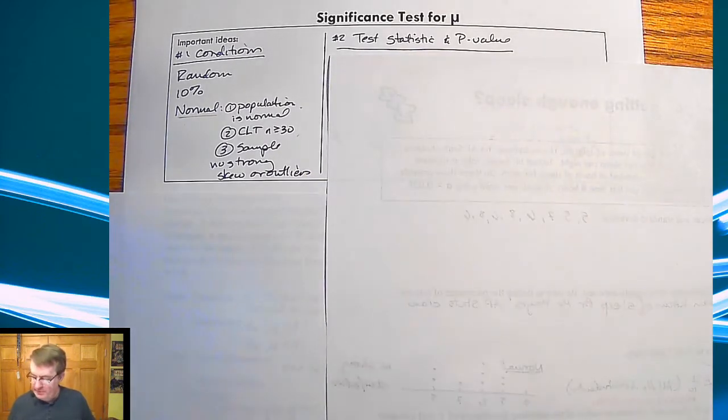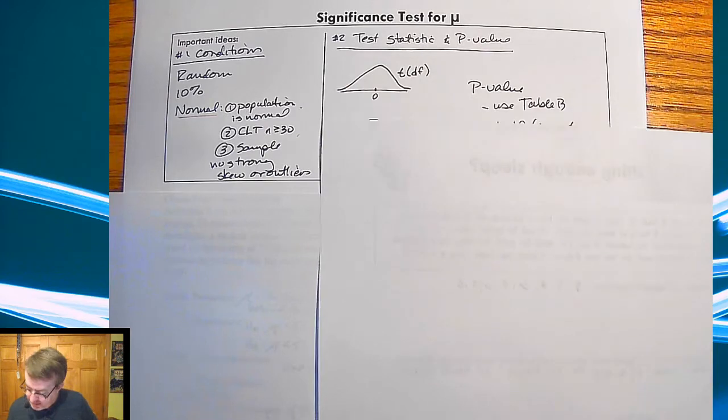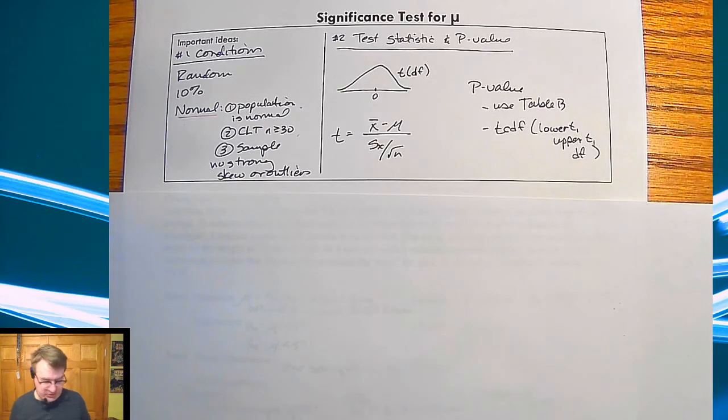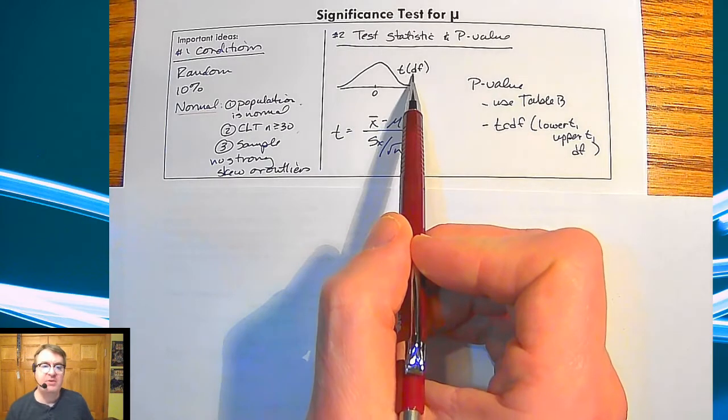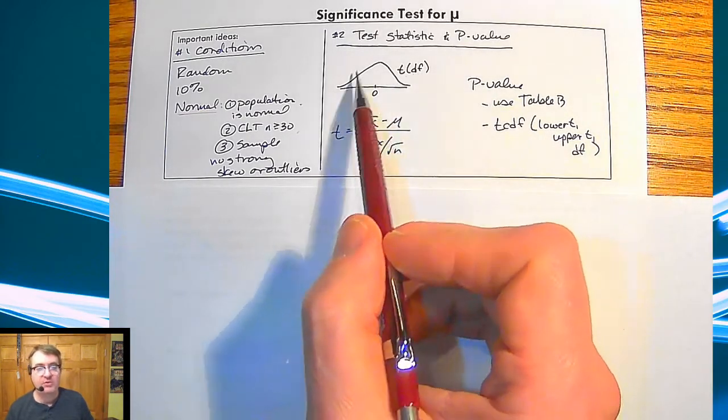Test statistic and p-values. So for here, there is my graph. Probably could have just done it all at once. So again, our graph is going to be a T with the degrees of freedom. We don't have to say it's a normal curve, it's going to be a T curve.